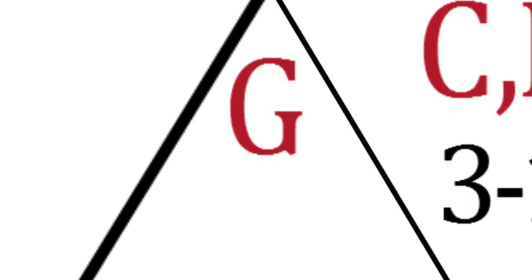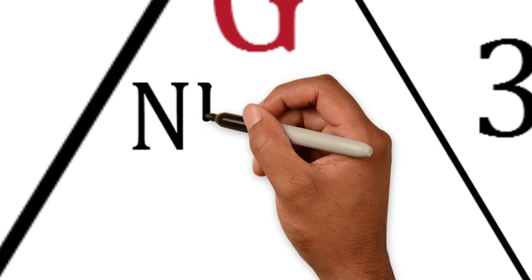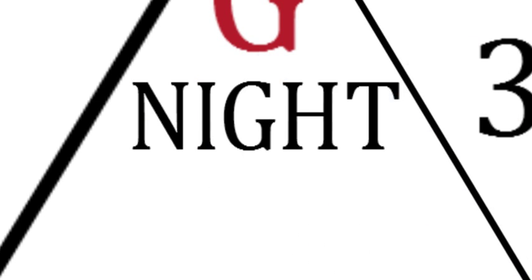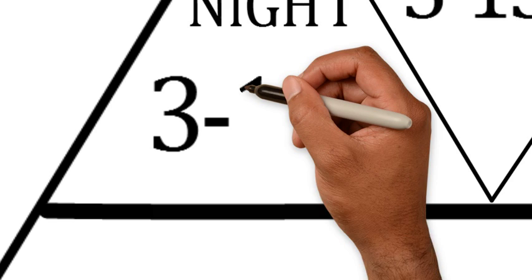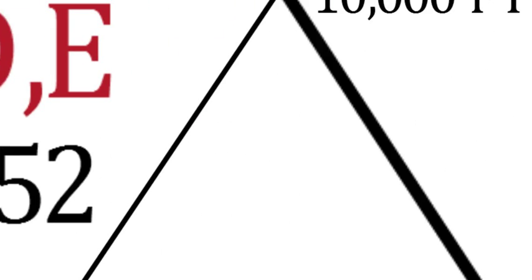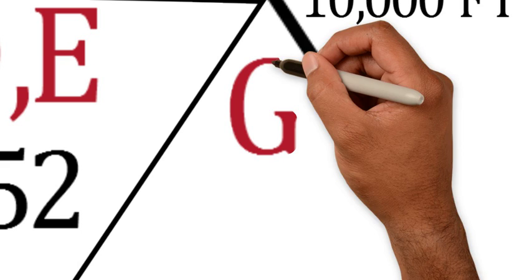To the left of Charlie Delta and Echo we have Golf at Night. So our Golf airspace at night, the VFR weather minimums are 3152. So you have 3 statute miles of visibility, 1,000 above, 500 below, and 2,000 feet horizontal.